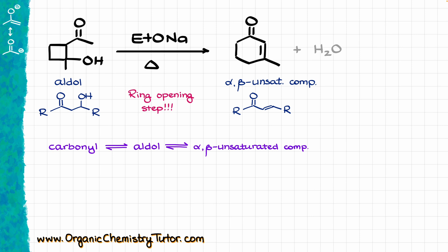The idea for my mechanism here would be to start with the aldol and form open-chain carbonyl, and then from that carbonyl I'm going to form a different aldol from where I'm going to make my final product, alpha-beta unsaturated compound.